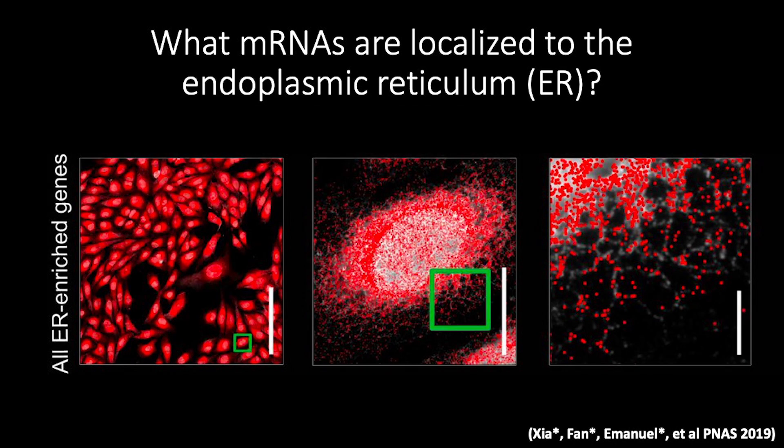Further, as MERFISH is an imaging-based approach, we can actually visualize all our identified significantly ER-enriched genes on top of the original KDEL staining image. If we zoom in, we can indeed see that these genes are beautifully spatially localized to the fine networks of the single cell's rough ER network.